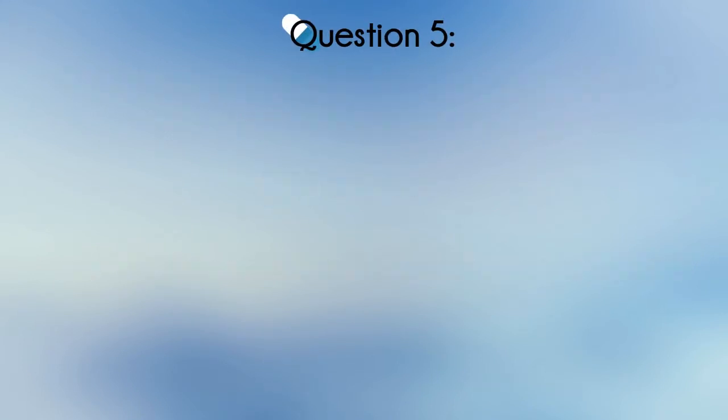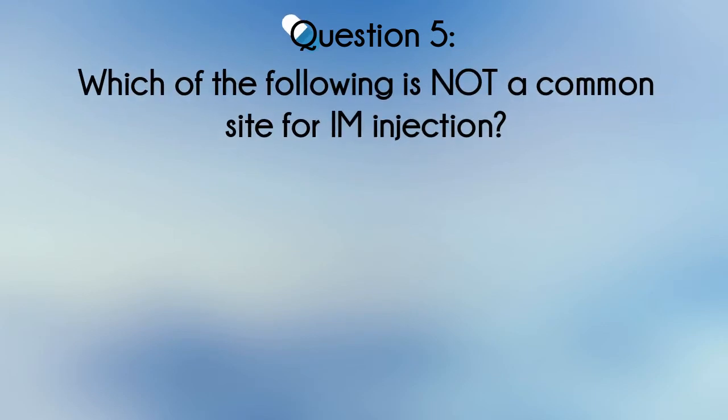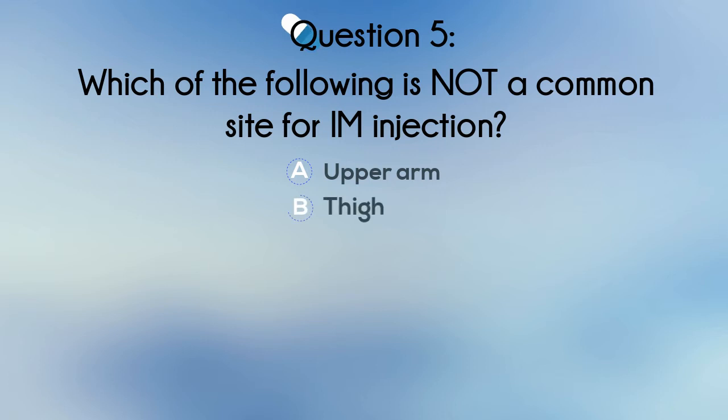Question 5. Which of the following is not a common site for IM injection? A. Upper arm, B. Thigh, C. Abdomen, or D. Buttock.